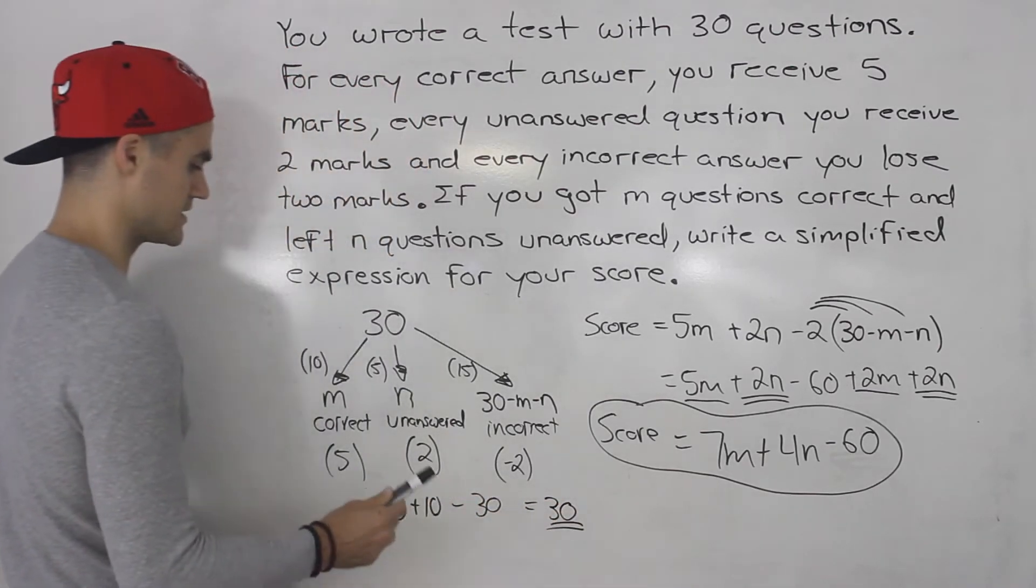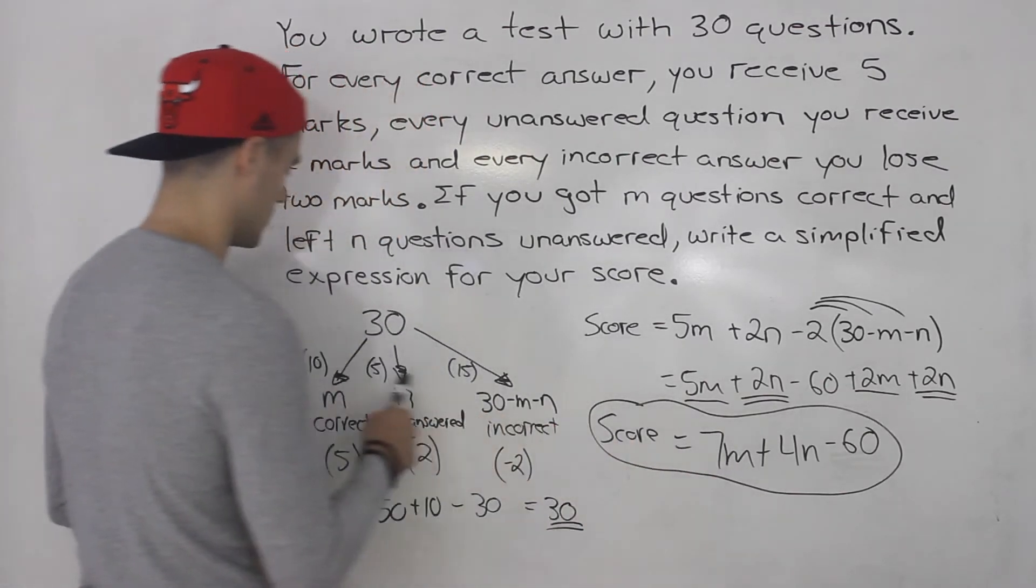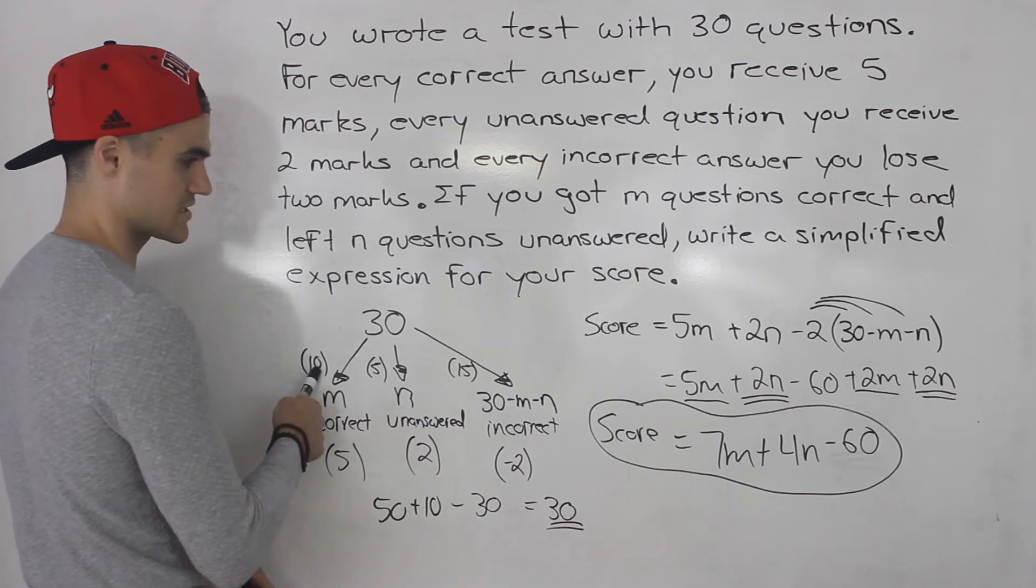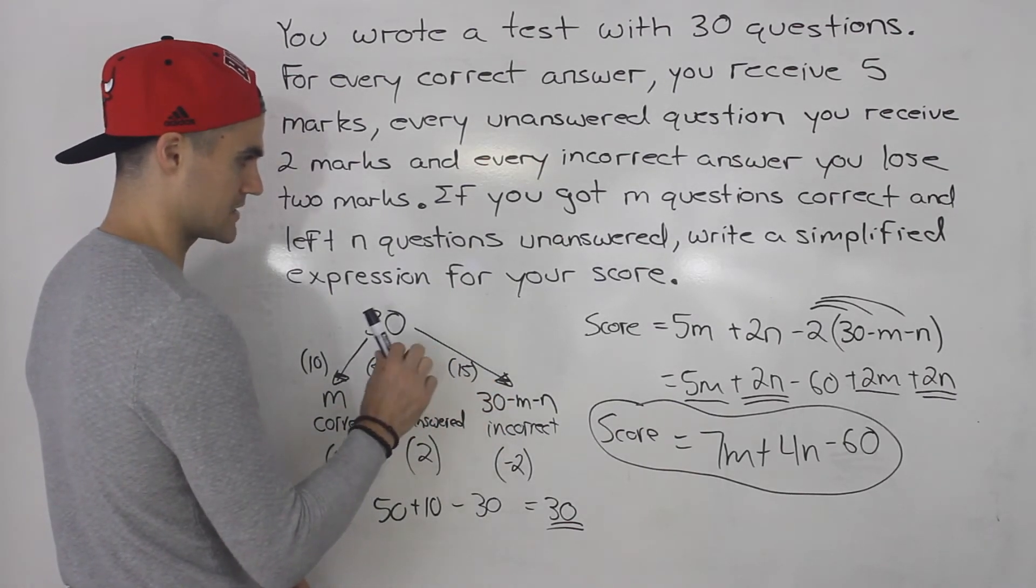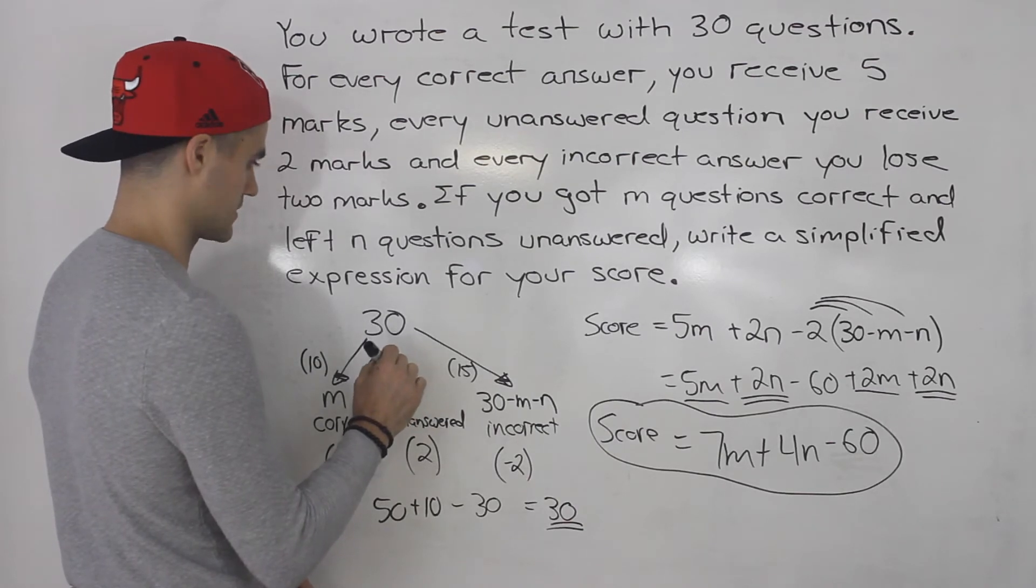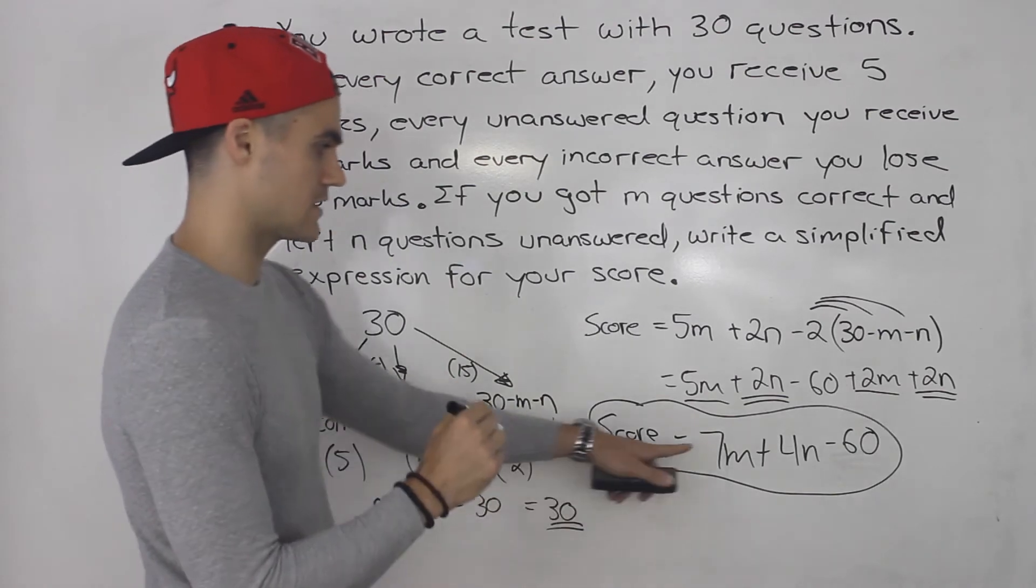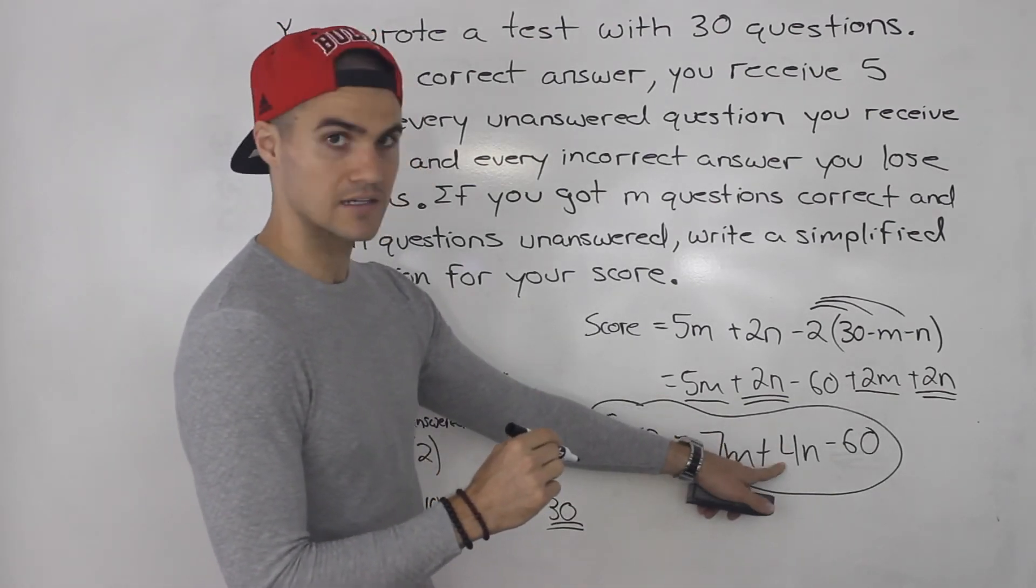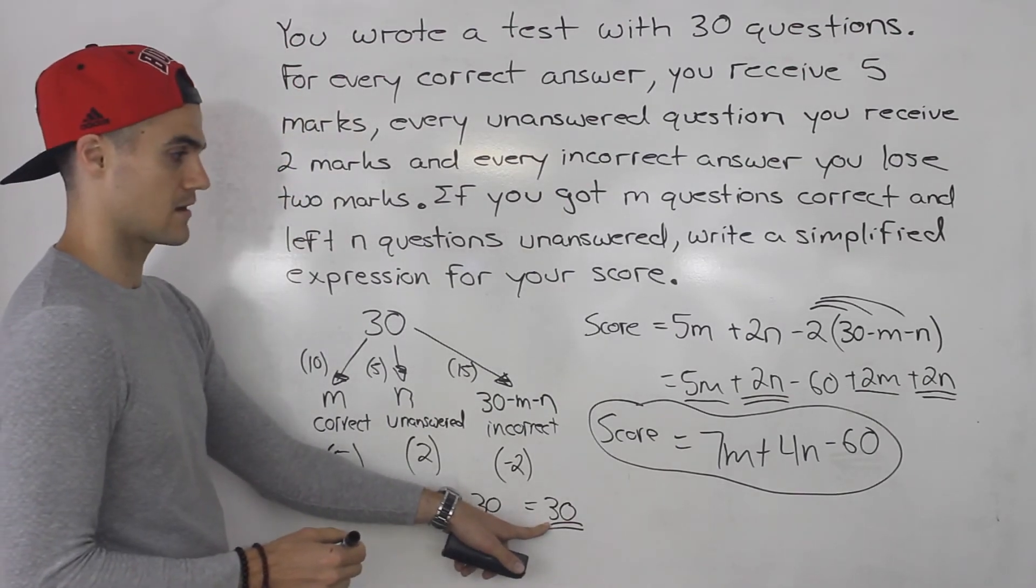And if we take this M and this N value instead and plug it in here we would have 7 times 10 which is 70 plus 4 times 5 which would give us 20. So this would be 70 plus 20 which is 90. And then 90 minus 60 gives us 30, which is the exact same answer.